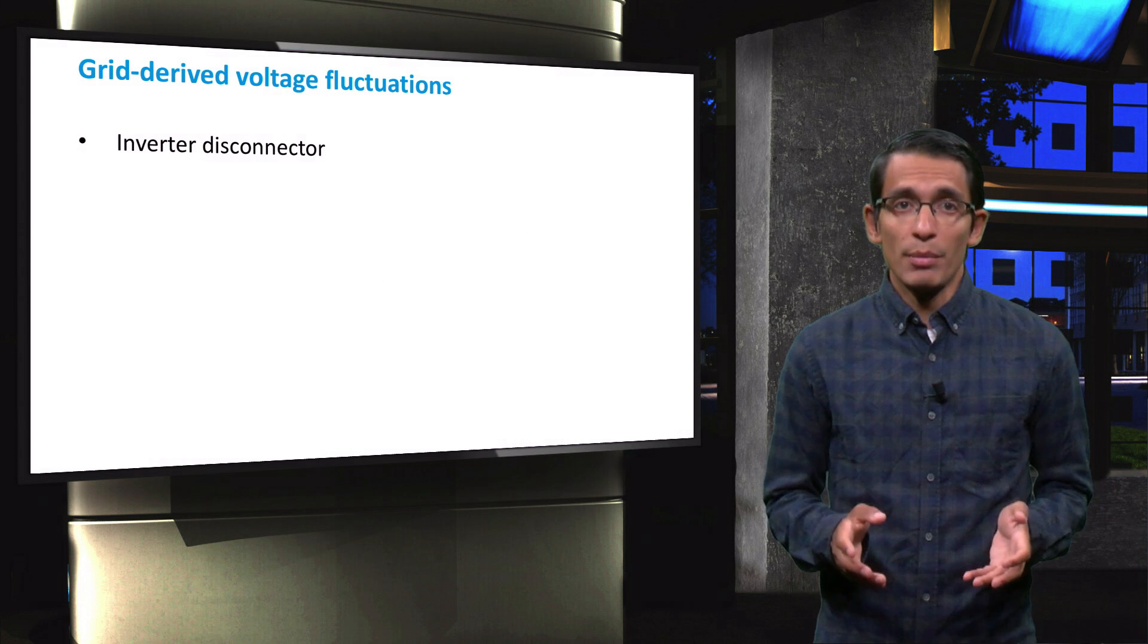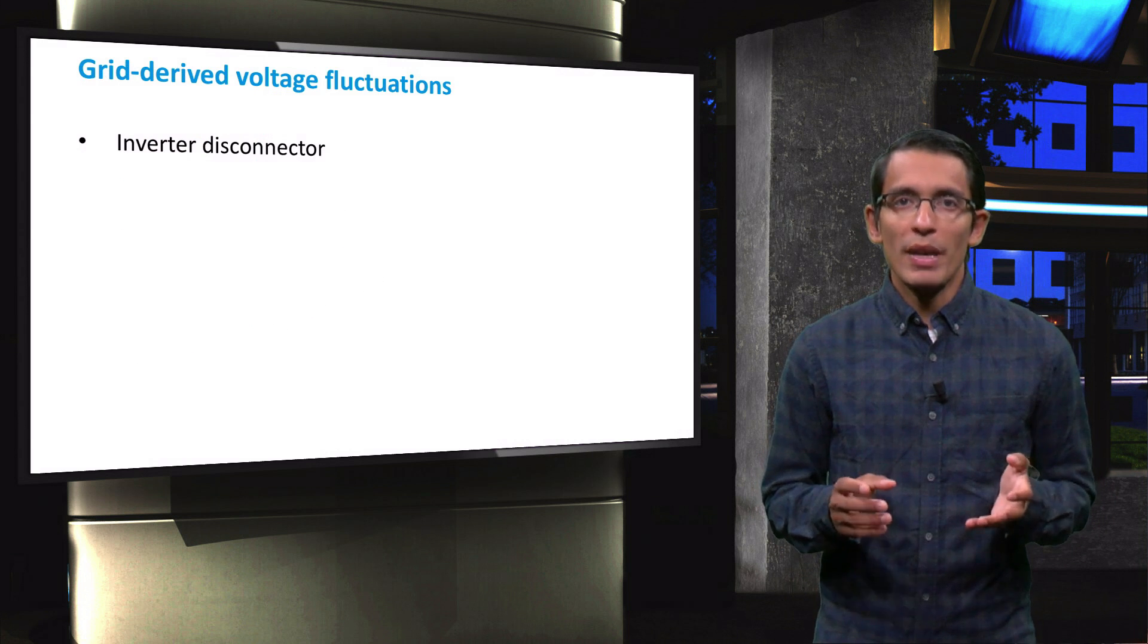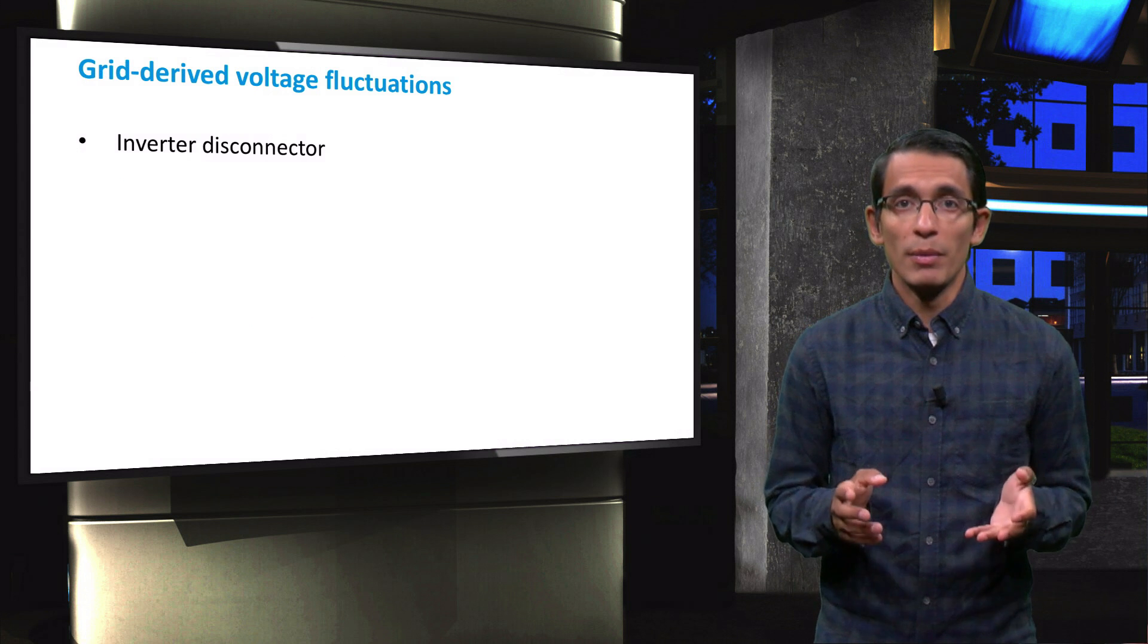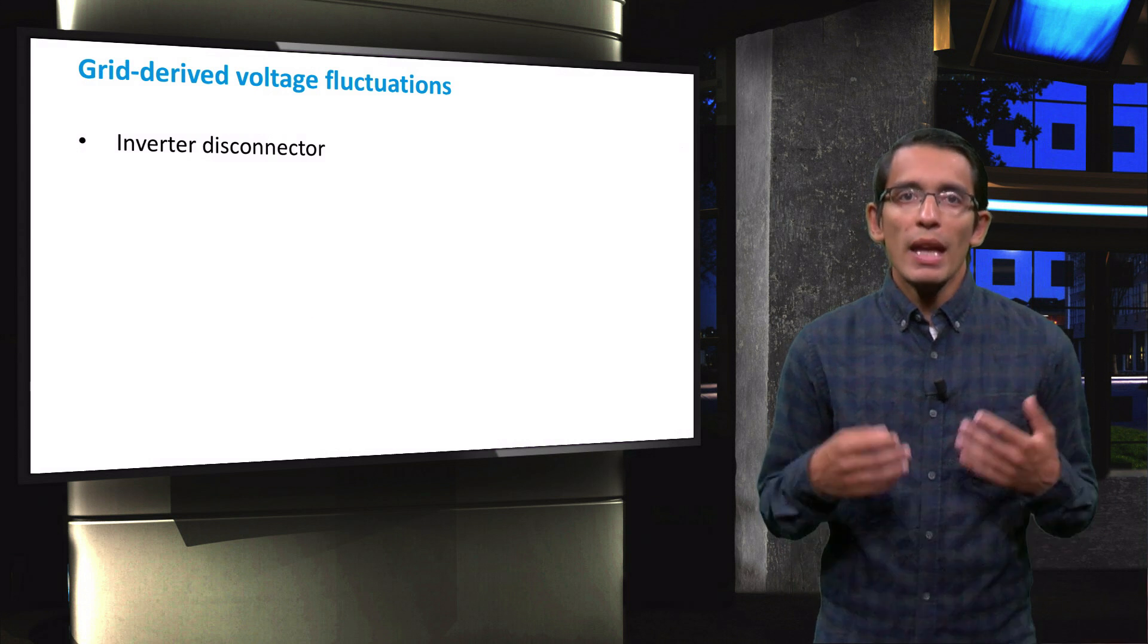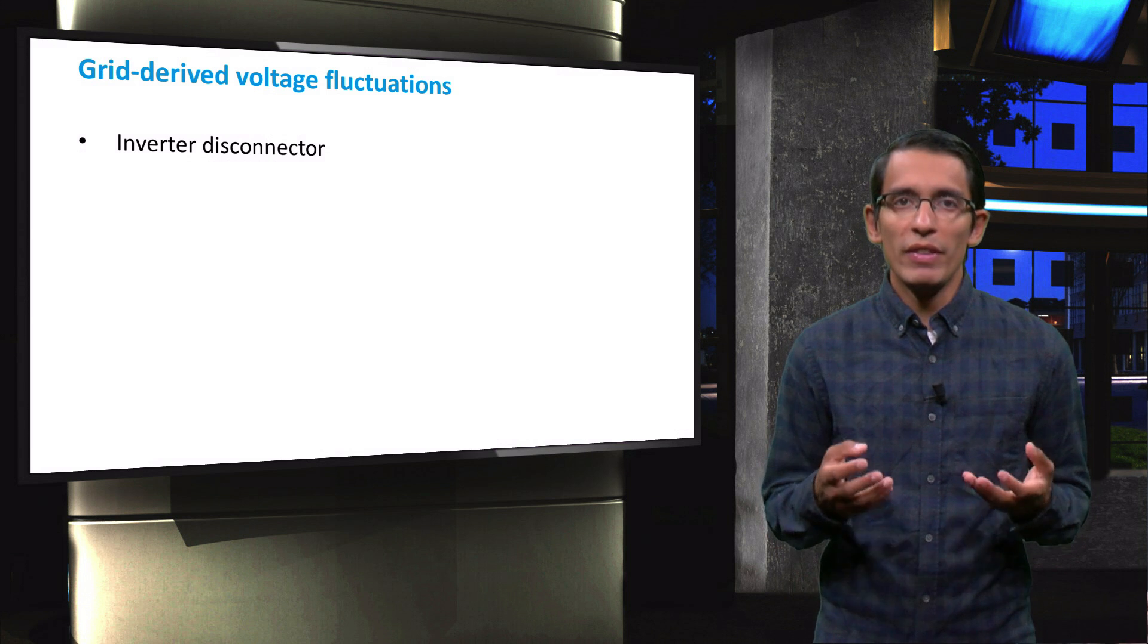In grid connected systems, voltage fluctuations may occur also outside of the PV system depending on the stability of the grid. In this case, we want to preserve our PV system from damage by means of some safety mechanisms.